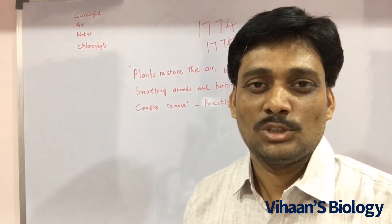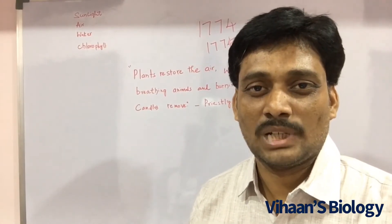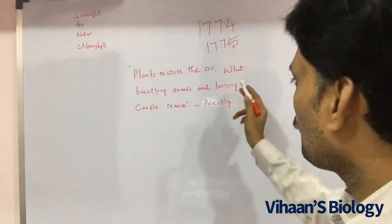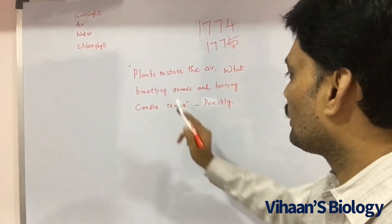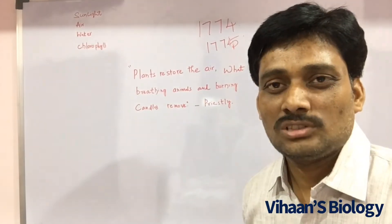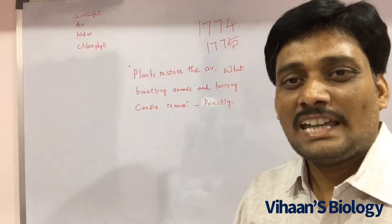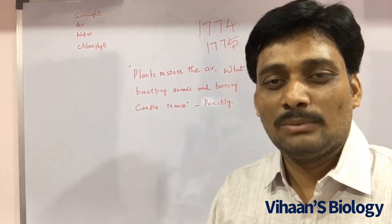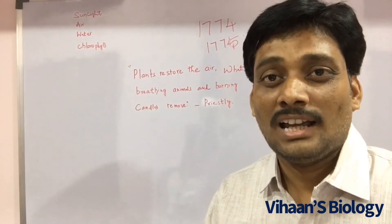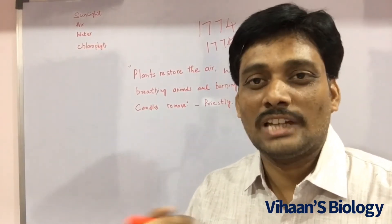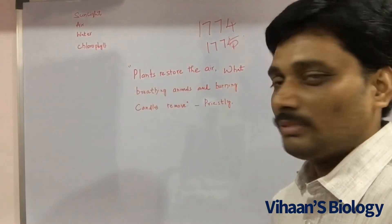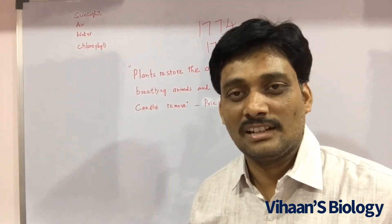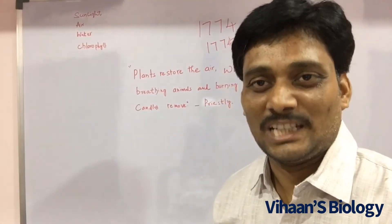This is the statement given by Joseph Priestley from his bell jar experiment: whatever the plants restore the air, breathing animals and burning candles remove. The burning candle removes oxygen and the animals utilize oxygen, but the oxygen is restored into the environment by the green plants.